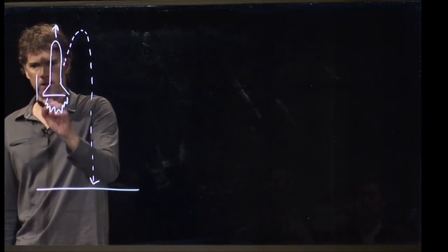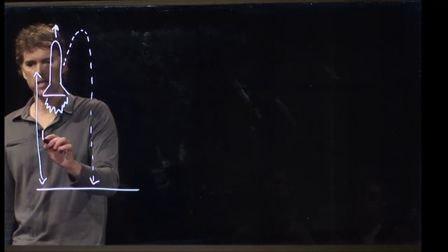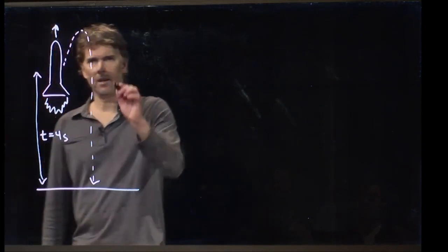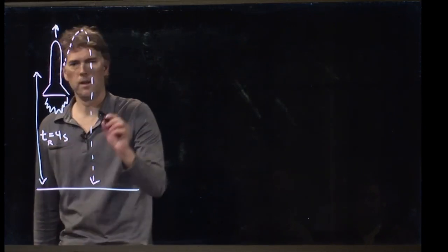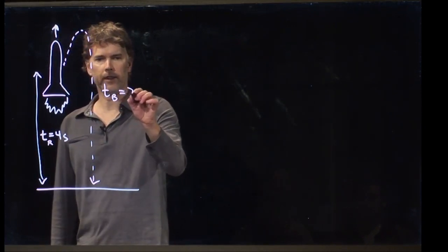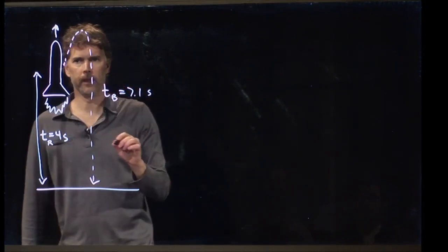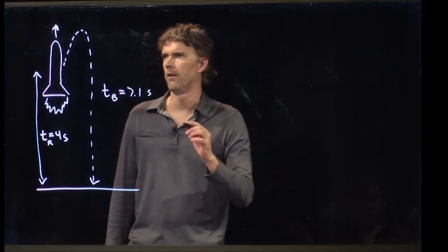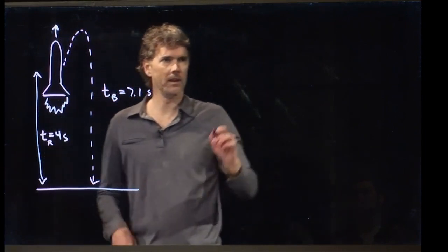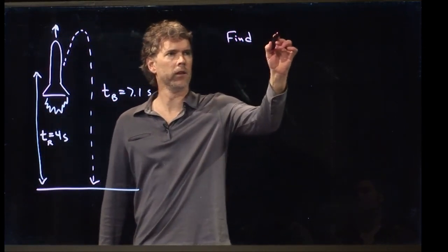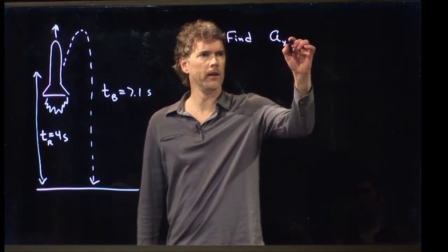And what we know is that happened at t equals 4 seconds, and the total time, so this is t for the rocket, and the time for the bolt to fall is 7.1 seconds. And what are we trying to find? Find the acceleration of the rocket, a sub y for the rocket.